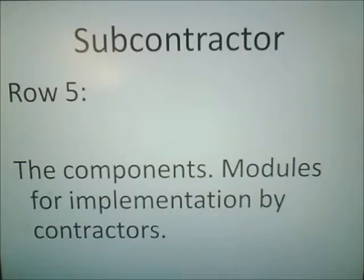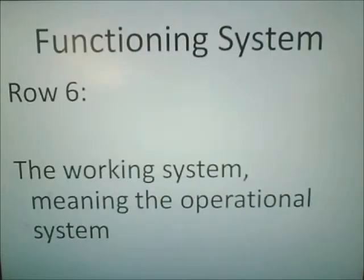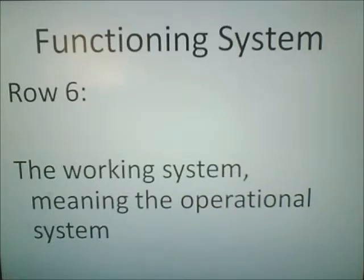The subcontractor goes into row five — the components. These are the models for implementation by contractors. The functioning system goes into the last row of the matrix, row six — the work and system, meaning the operational system.